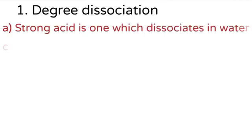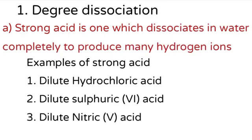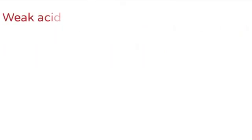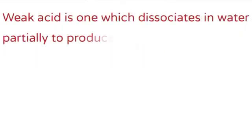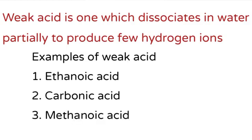Starting with degree of dissociation: a strong acid is one which dissociates completely when dissolved in water to produce many hydrogen ions. Examples include dilute hydrochloric acid, dilute sulfuric acid, and dilute nitric acid. A weak acid is one which dissociates partially when dissolved in water to produce few hydrogen ions. Examples include ethanoic acid, carbonic acid, and methanoic acid.